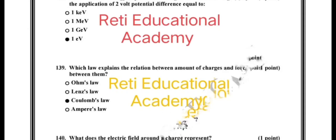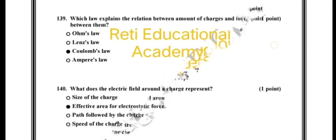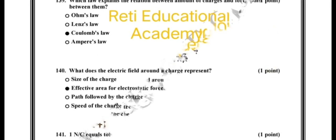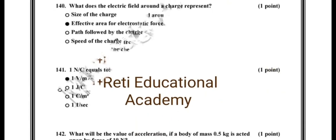The correct option is Coulomb's law. Question number 140: What does the electric field around a charge represent? The correct option is effective area of electrostatic force. Question number 141: 1 NC equals to?